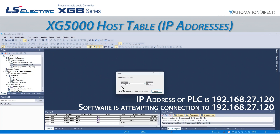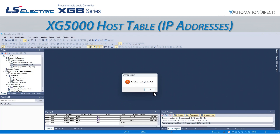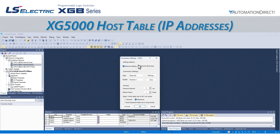In our example, we added the IP address of our drive, but we didn't add the IP address of our computer running XG5000. If we attempt to connect to the PLC using the Ethernet connection, we get a failed connecting to the PLC error, indicating the PLC refused the connection. In this case, the USB port on the CPU will still allow us to connect.